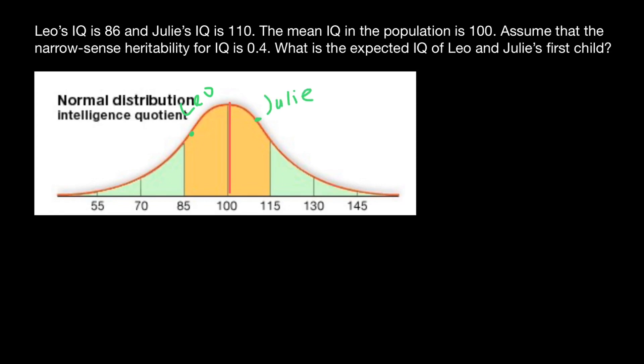In order to solve this problem, we have to find response to selection, or R, which equals h² (which stands for the narrow-sense heritability) times S, which stands for the selection differential. What is the selection differential? This is the difference between mean of the base population and mean of the selected parents.